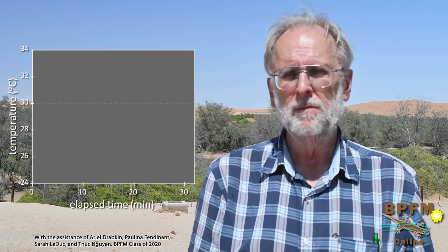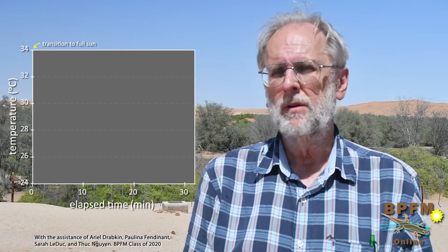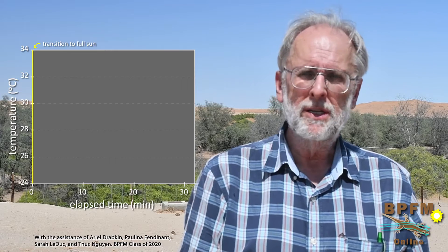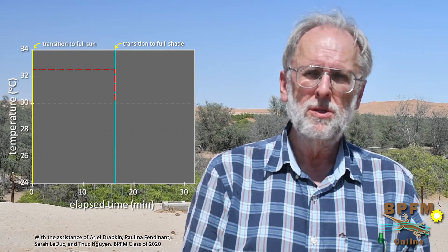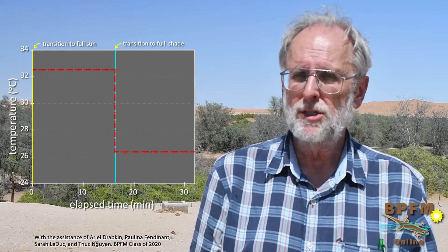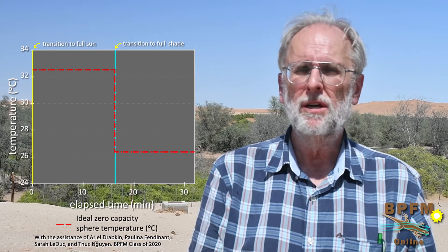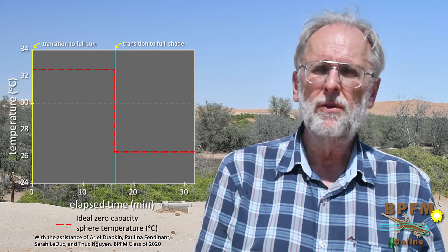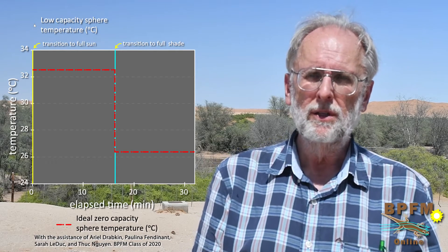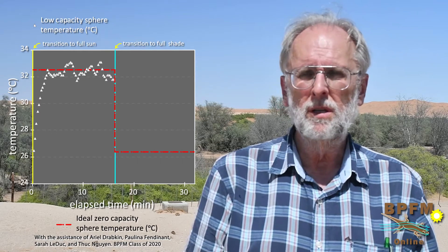Let's look at the results. We'll plot temperature on the vertical axis and elapsed time in minutes on the horizontal axis. At time zero, the balls — which had been maintained in full shade — were then exposed to full sunlight. We'll mark the transition with this vertical yellow line. After 16 minutes in full sun, the balls were then shaded; we'll mark this transition with this vertical blue line. What we've done is impose a step change in operative temperature, indicated by this dashed line. This is the response we'd expect for an ideal operative temperature model with zero thermal capacity — instantaneous change corresponding to exposing or shading the ball. Let's plot the results for the low capacity sphere first using white triangles. With the transition to full sun, the low capacity sphere's temperature rises rapidly to an equilibrium temperature somewhere between 32 and 33 degrees Celsius.